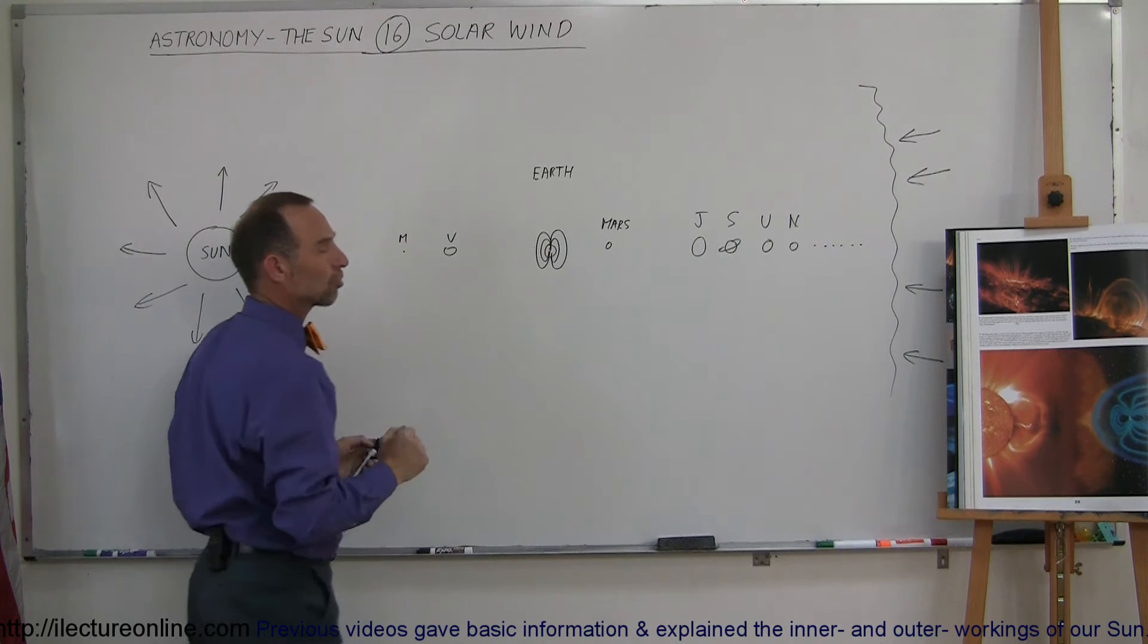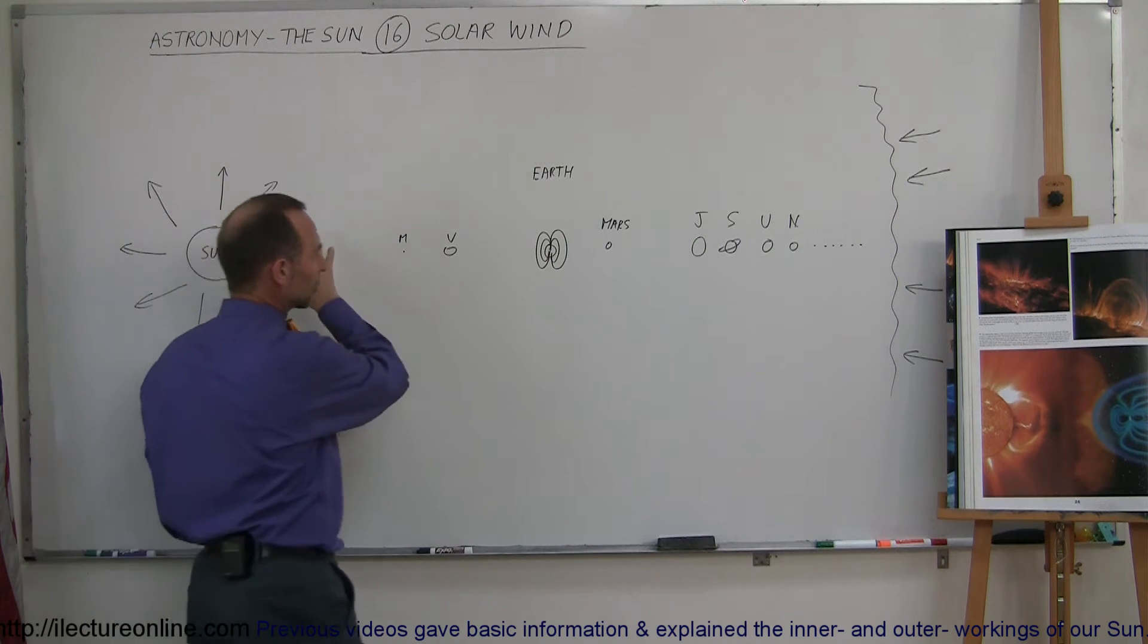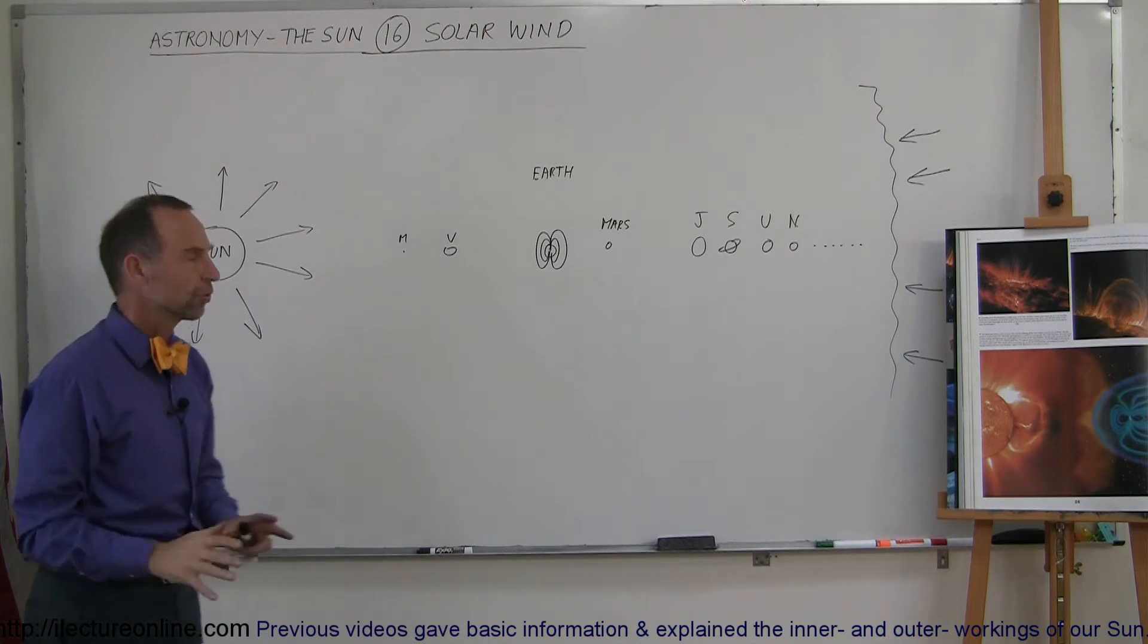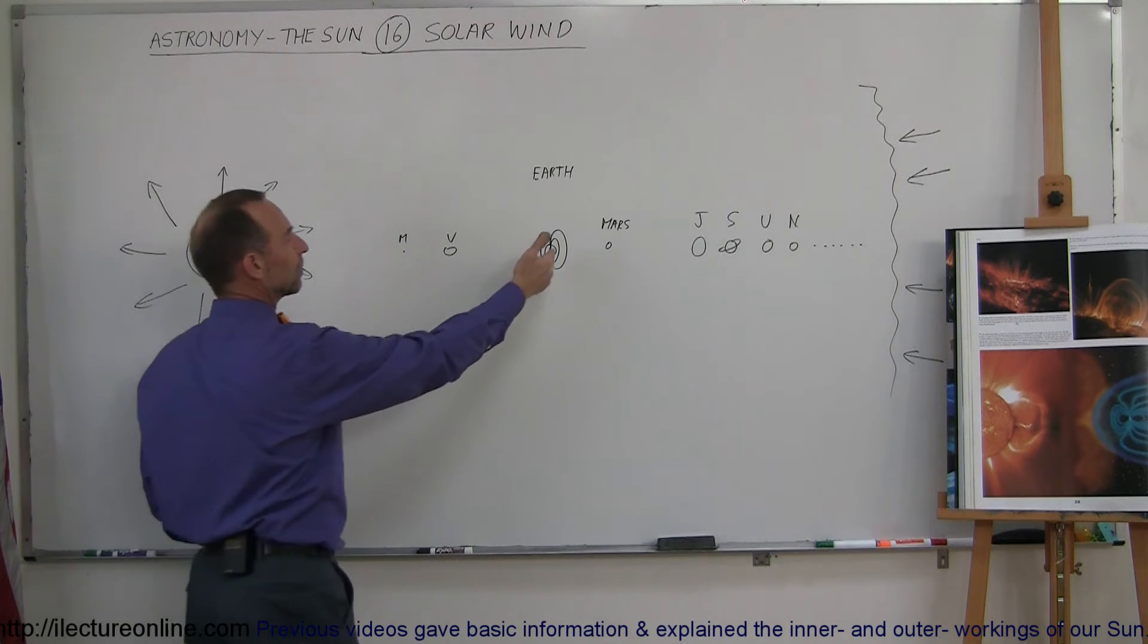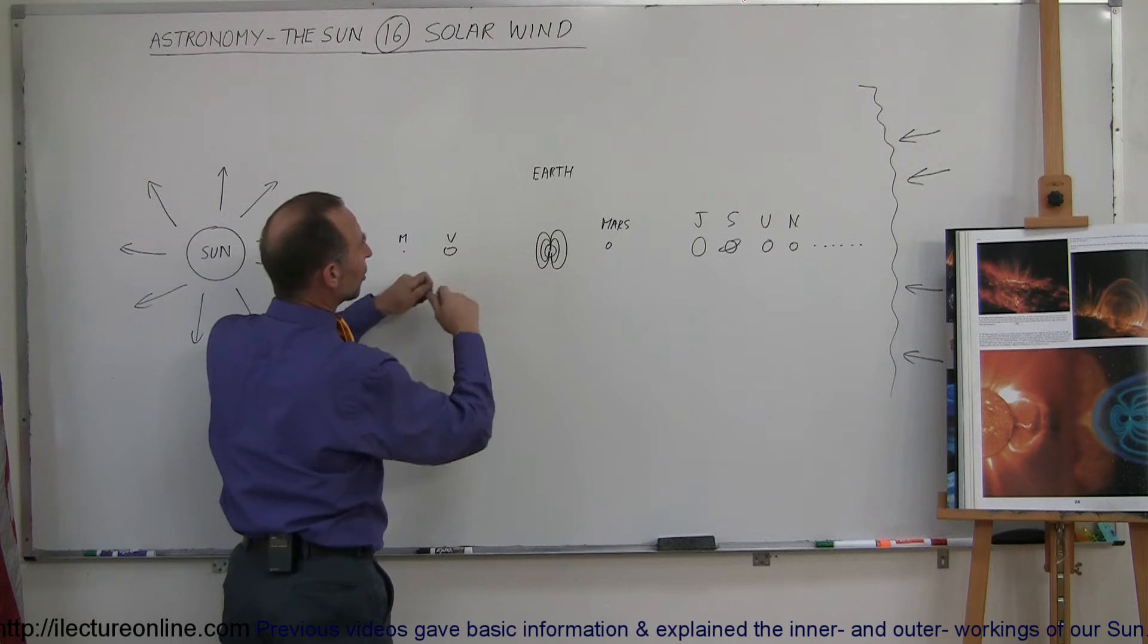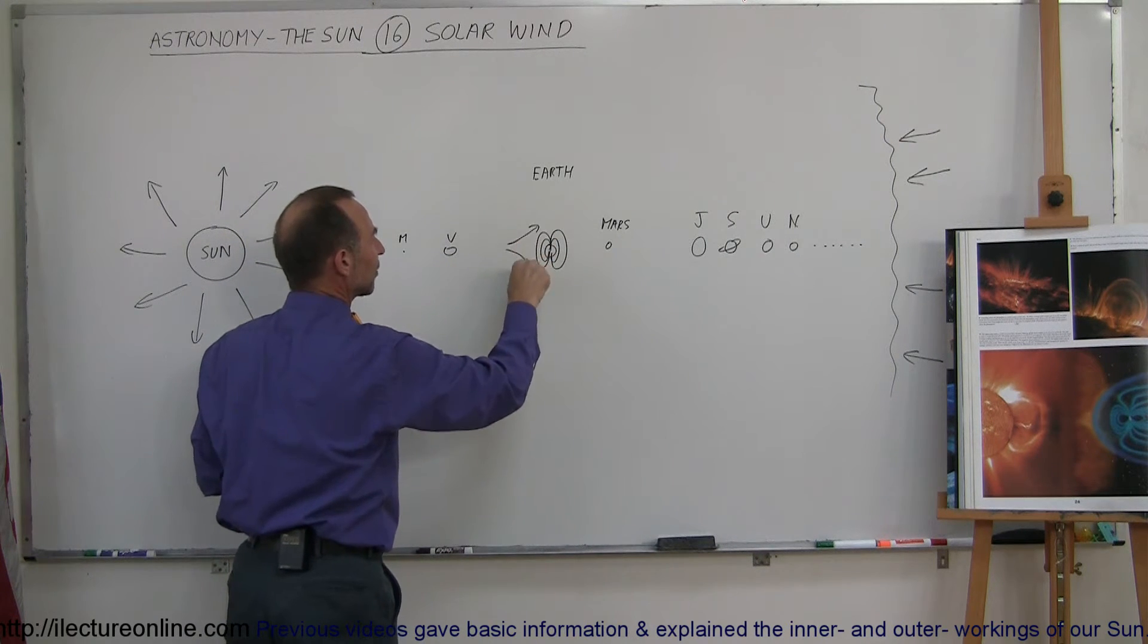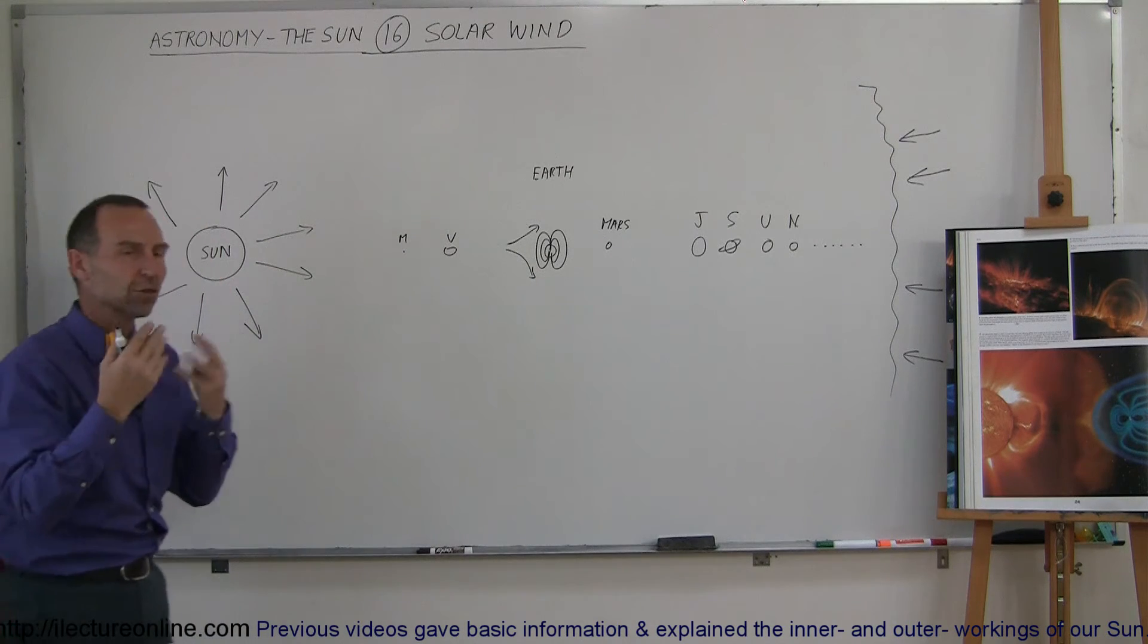Now the earth has a very strong magnetic field relatively speaking, and so the particles as they come towards the earth, instead of slamming into it and destroying all life on the surface, the earth is protected by having a magnetic field which causes the particles to be deflected, the negative in one direction with the positive in the other direction, protecting us from that solar wind onslaught.